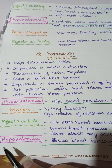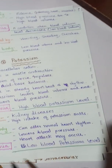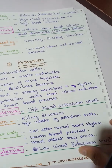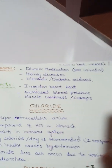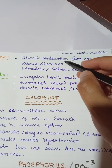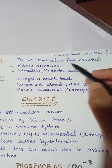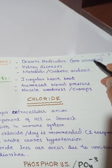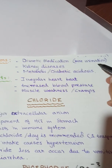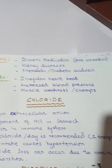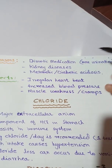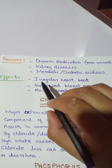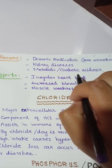The condition in which potassium level lowers down is hypokalemia — low blood potassium level. The reasons for low blood potassium include kidney diseases, diuretic medications (medicines which cause more urination), heart diseases, and metabolic or diabetic acidosis.